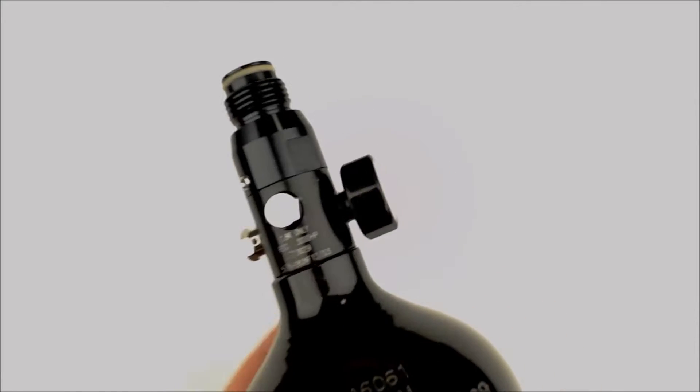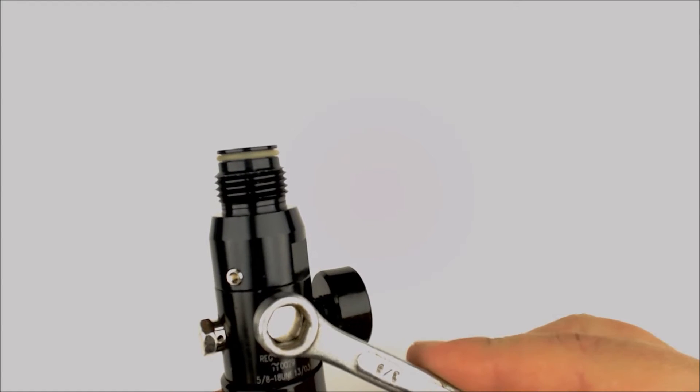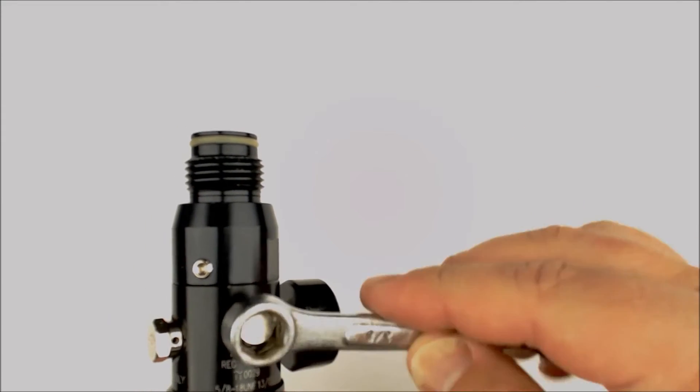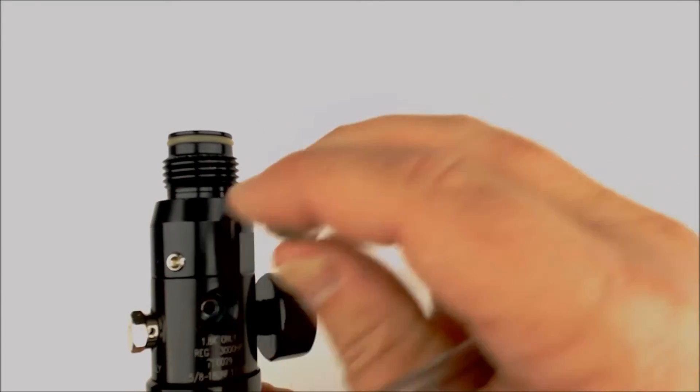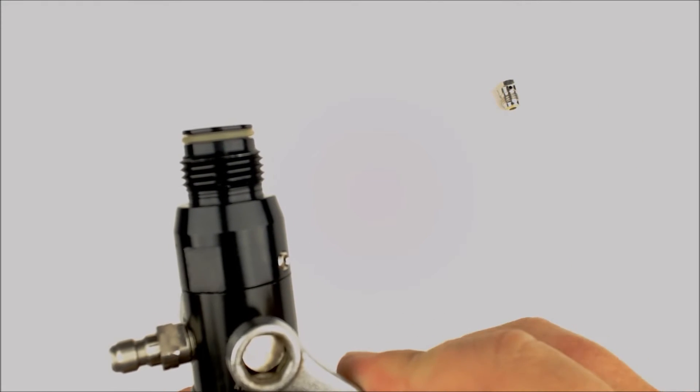The burst discs come off with a 3⁄8 wrench. They shouldn't be on there too tight. So that is the low pressure burst disc, now the high pressure burst disc.